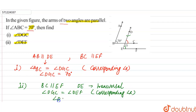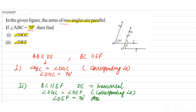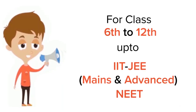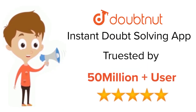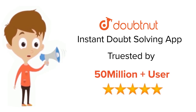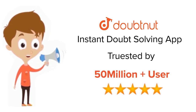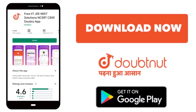Therefore, angle DEF is also equal to 70 degrees, and this is the required answer. For class 6 to 12th, IIT JEE, and NEET level — trusted by more than 5 crore students — download the DoubtNet app today.